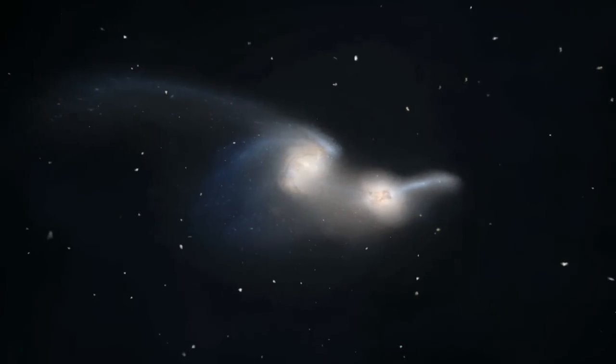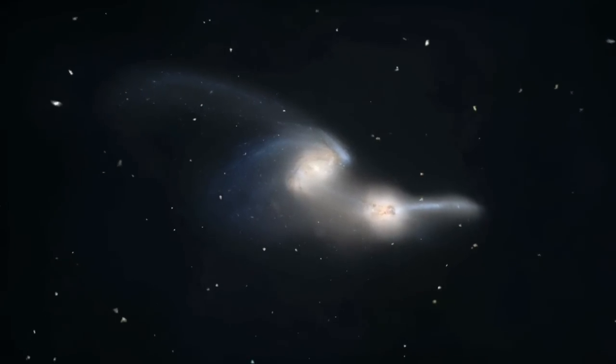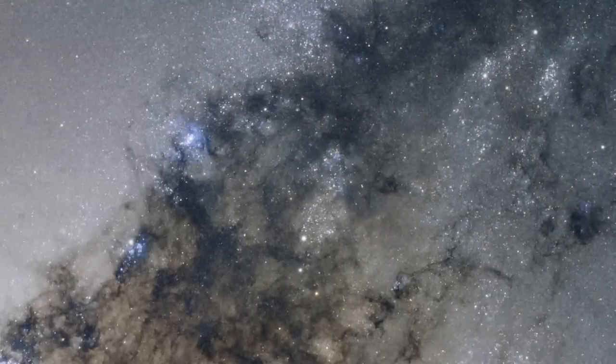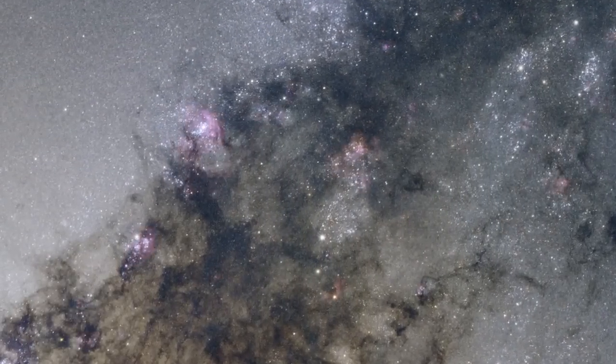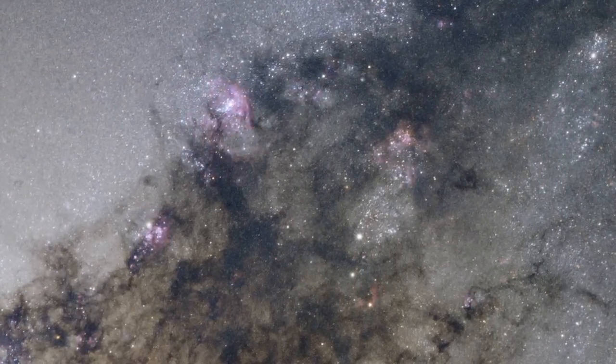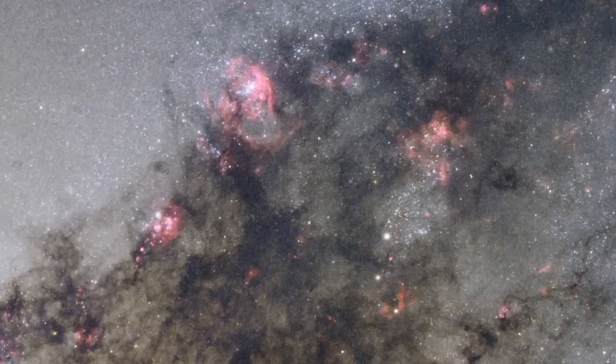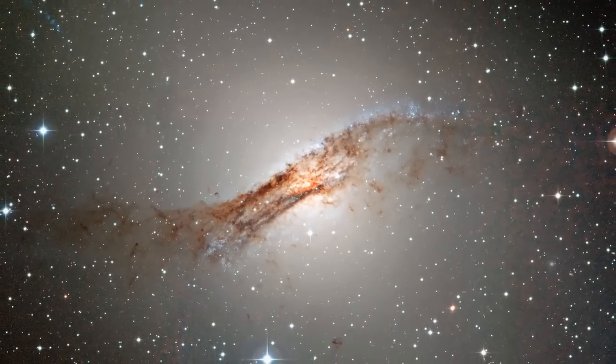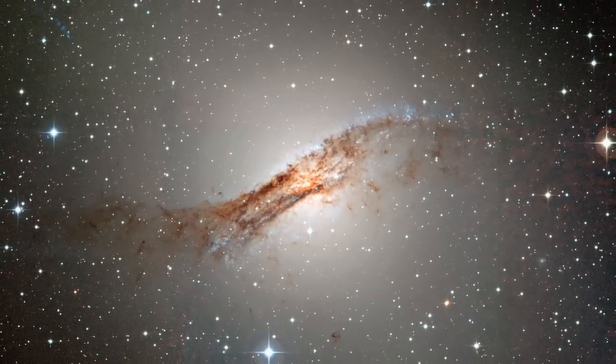Astronomers think that Centaurus A must have collided and merged with another galaxy at some point in the past. The shock waves of this event caused hydrogen gas to coalesce and sparked intense areas of star formation, as seen in the red patches visible here. The turmoil of this collision also explains the warped shape of the galaxy's disk.